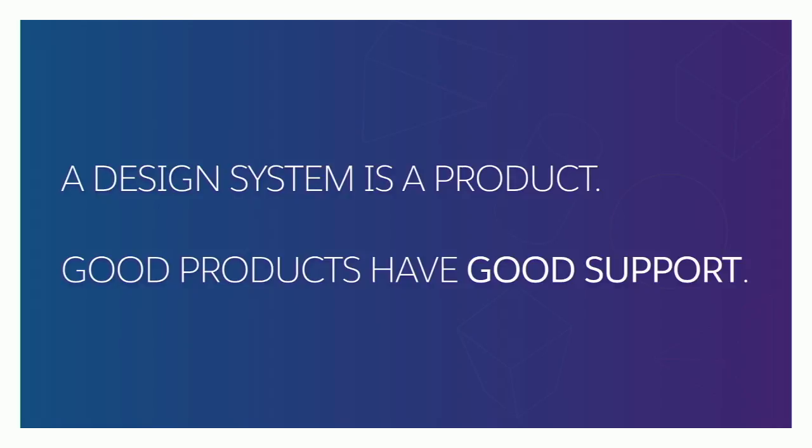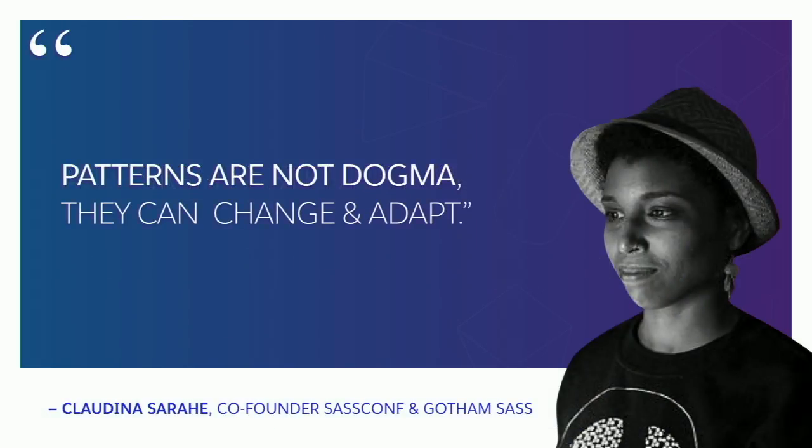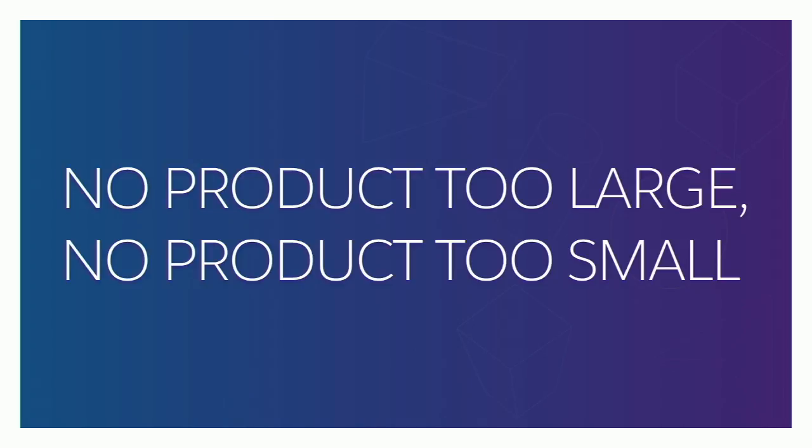It's also important to allow your design system to evolve and grow. Claudina Sarai said that patterns are not dogma — they can change and adapt. A lot of people fall in love with their design system and don't want anything to change, but to make it a maintainable, living, evolving design system you have to allow room for change. And I get the question: 'we're not Salesforce, we're just a small startup — why would we want to do this?' There is no product or company too large or too small. You don't have to do tokens at our scale, but just having a design system is a great way to enable you to scale.